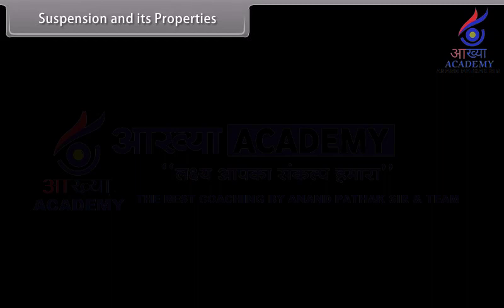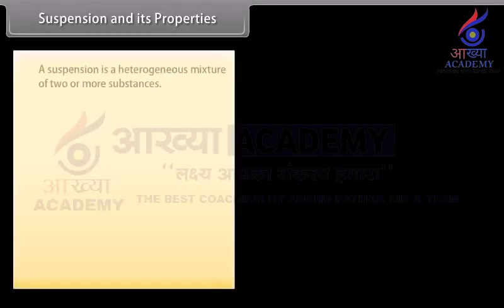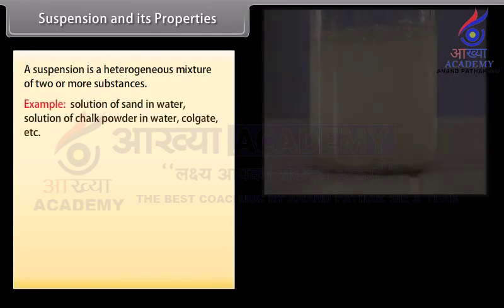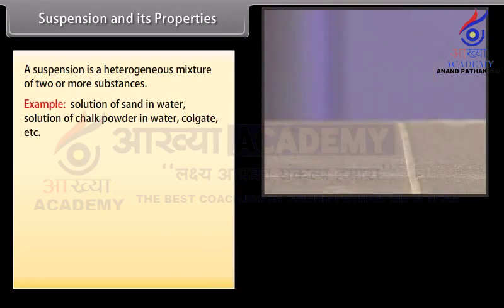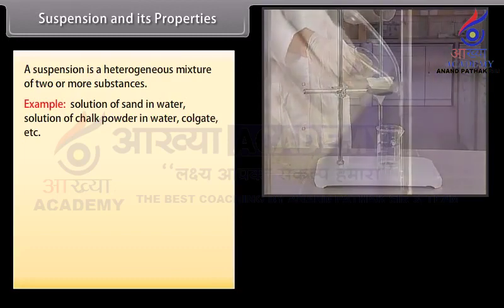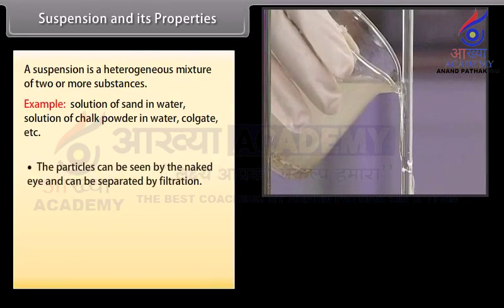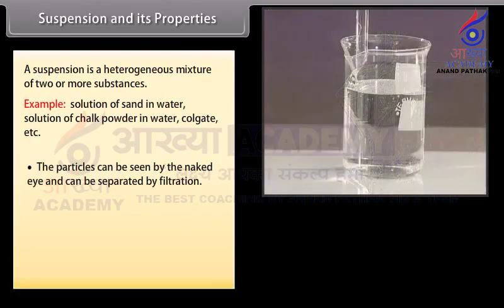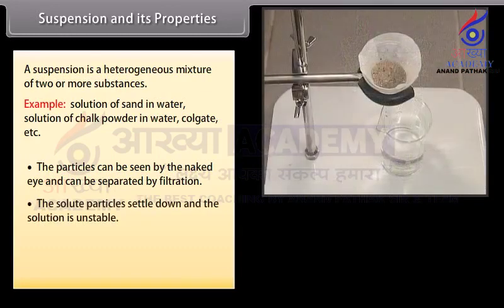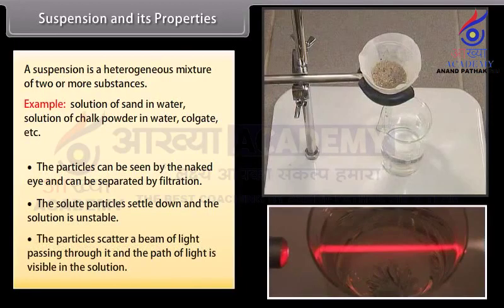Suspension and its Properties. A suspension is a heterogeneous mixture of two or more substances. Examples include solution of sand in water, chalk powder in water, and toothpaste. The particles can be seen by the naked eye and can be separated by filtration. The solute particles settle down and the solution is unstable.